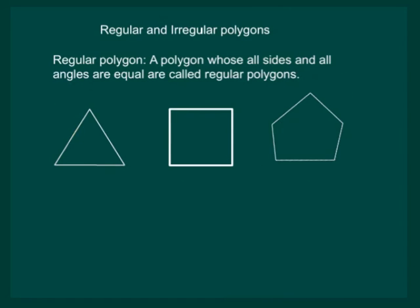Let us define regular and irregular polygons. A polygon whose all sides and all angles are equal are called regular polygons. For example, equilateral triangle, a square, a pentagon are regular polygons.